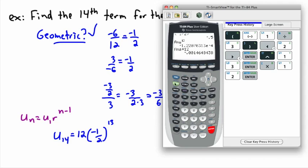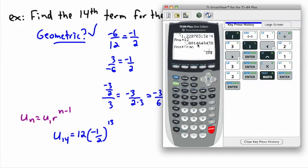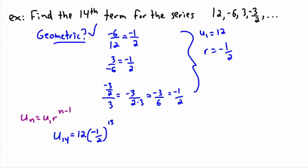Now I don't feel like writing all this down, and I suspect this will probably be a fraction. So if you ever want to convert to a fraction, at least on a TI calculator like a TI 84, it's easy: just press math, enter, enter. So I just remember if I want to convert a decimal to a fraction, if it's a rational number, it's always math, enter, enter. That gives me negative 3 over 2048. So U14, the 14th term, is negative 3 over 2048.